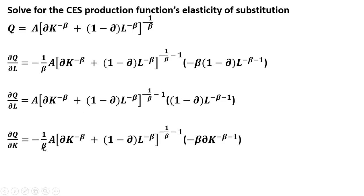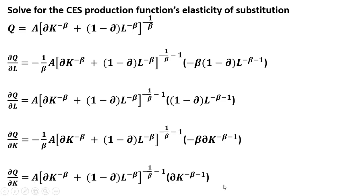Now the marginal product of capital, taking the partial derivative of the production function with respect to K. Once again, we bring down this exponent, this minus 1 divided by beta, out in front. We subtract 1 from that exponent as well. Then looking in the brackets, we find the K term and take the derivative — bringing down this minus beta from the K exponent and subtracting 1 from the K exponent. Once again, minus 1 divided by beta and minus beta cancel, and we're left with the result.